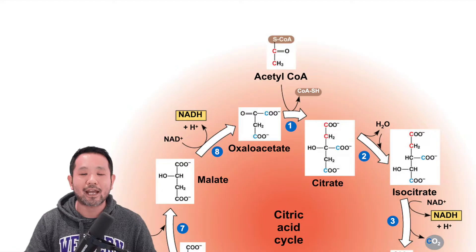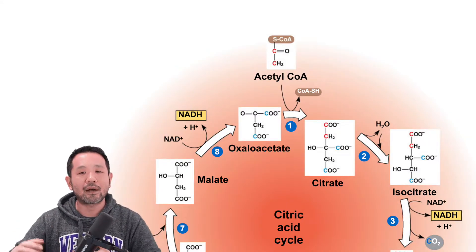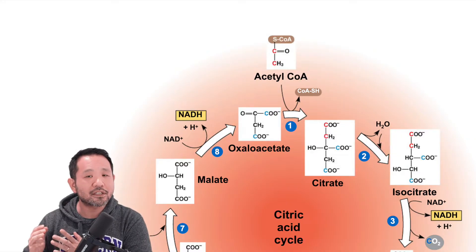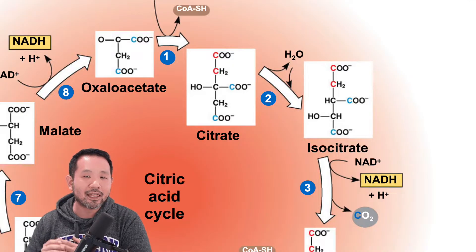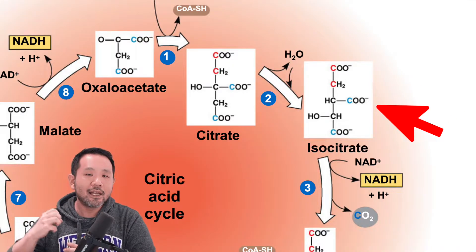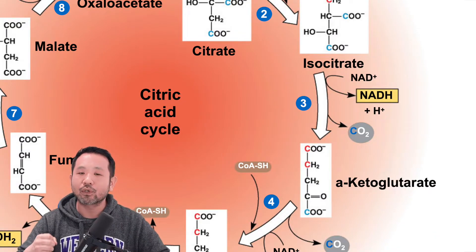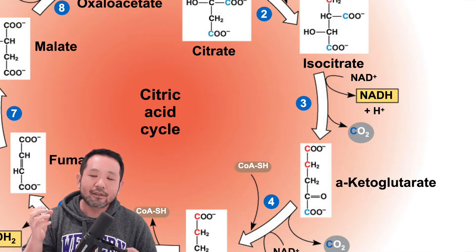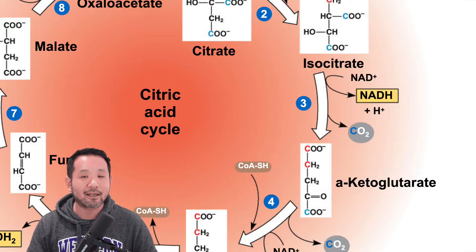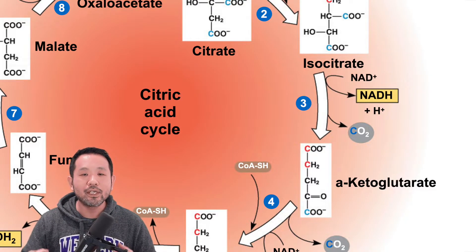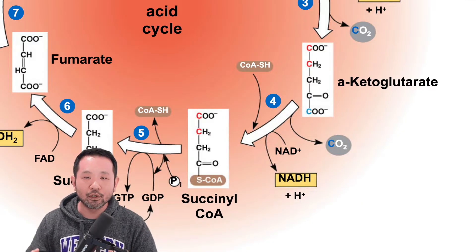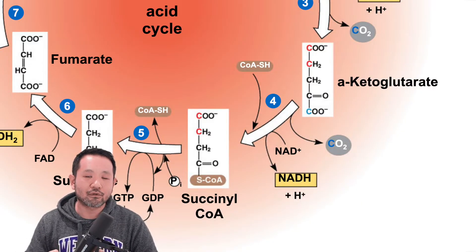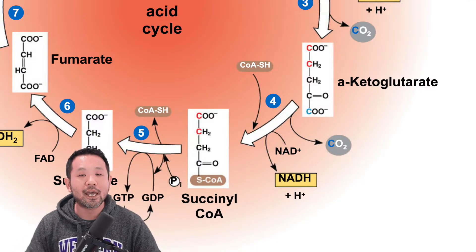There's an isomerase that turns citrate into isocitrate, but nothing interesting is happening there — we're just setting up for the next big events. The next thing that occurs is that CO2 is removed from isocitrate. As we're breaking bonds, we're releasing electrons, and NAD+ is ready to capture those electrons again. As alpha-ketoglutarate forms, we yet have more carbon dioxide to throw out, so that CO2 at the bottom of alpha-ketoglutarate gets removed next, and NAD+ is charged up to NADH yet again.